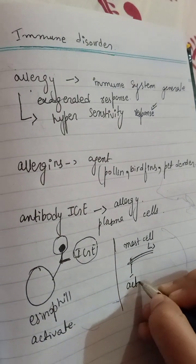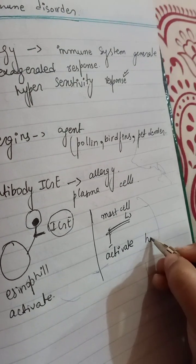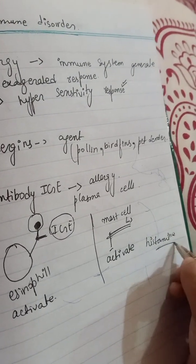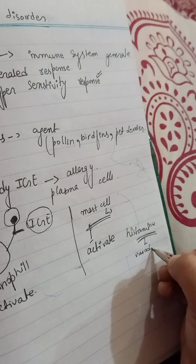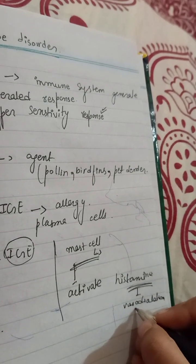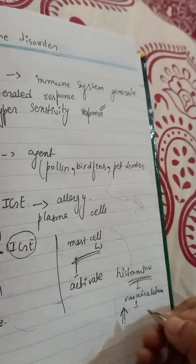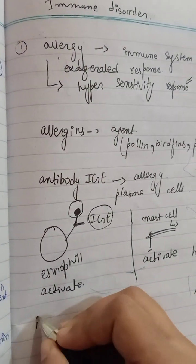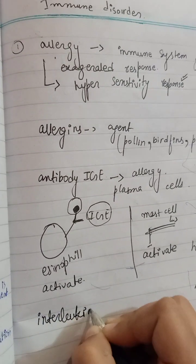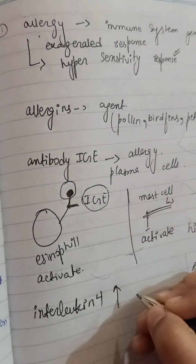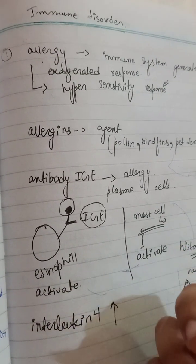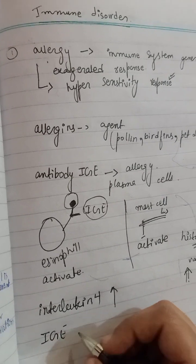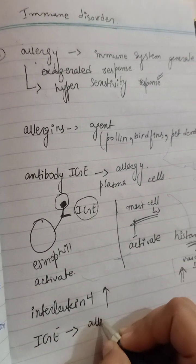The mast cell will activate and release histamine. Histamine is basically a chemical which causes vasodilation — the blood vessels get wider. When vasodilation occurs, secretion of mucus increases because of the wider blood vessels. The mast cell also releases interleukin-4, and in abnormal conditions it increases more, which triggers the IgE and causes an allergic reaction.